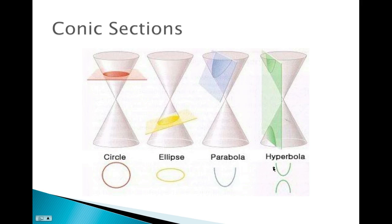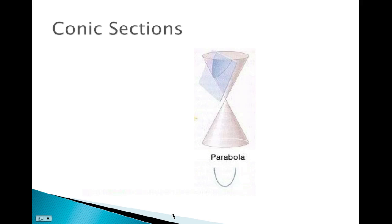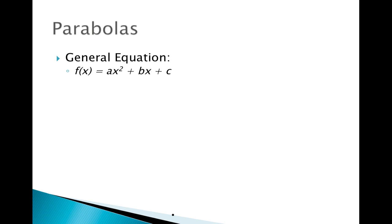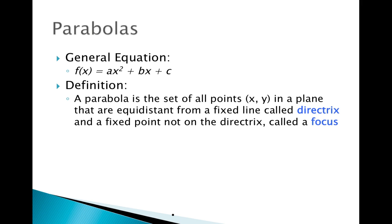The last type of shape is a hyperbola, which you get when the plane is perpendicular to the end of the cone. Today we're specifically going to focus on parabolas. By definition, a parabola is the set of all points in a plane equidistant from a fixed line called the directrix and a fixed point not on the directrix called the focus.